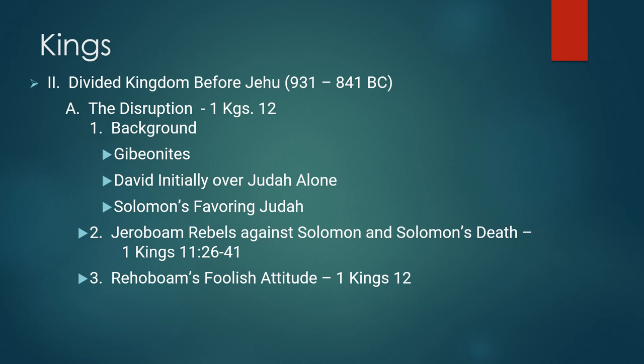There's an interesting literary note here. The dividing line between Hebrew poetry and Hebrew prose is fluid, but the primary characteristic of Hebrew poetry is parallelism. In verse 16 you see double parallels: 'What share do we have in David? / What part do we have in Jesse's son?' and 'To your tents, O Israel / Look after your own house, O David.' That kind of repetitive rhetoric is characteristic of Semitic writing and emphasizes forcefully that there is a split in the kingdom.